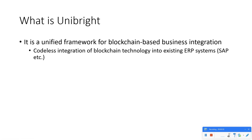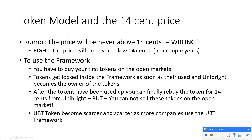So let's dive right into it. What is Unibright? It is a unified framework for blockchain-based business integration. It offers you a codeless integration of blockchain technology into existing ERP systems like SAP. Now we come to the token model and the 14-cent price.